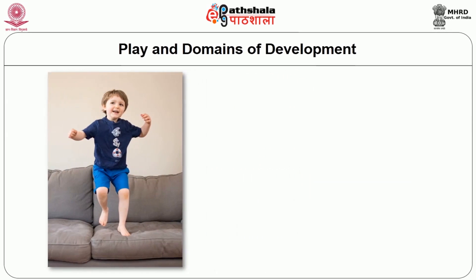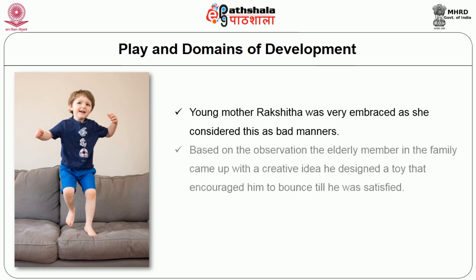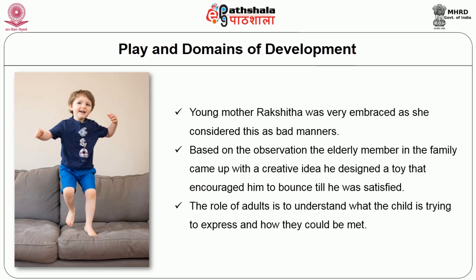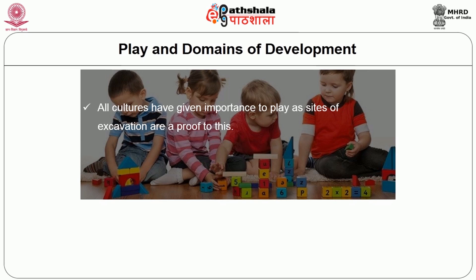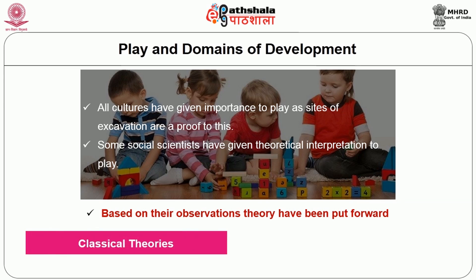Ajit, one and a half years old, was enjoying bouncing on a sofa. His young mother Rakshita was very embarrassed as she considered this bad manners. Based on observation, an elderly family member came up with a creative idea and designed a toy that encouraged him to bounce till he was satisfied. The role of adults is to understand what the child is trying to express and how those needs could be met. All cultures have given importance to play, as sites of excavation are proof of this. Some social scientists have given theoretical interpretations to play based on their observations, and theories have been put forward. These could be classified as early classical theories and current theories.